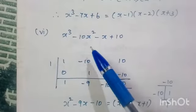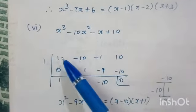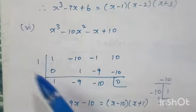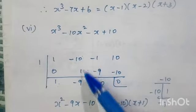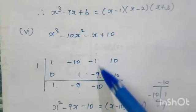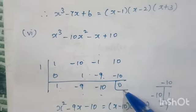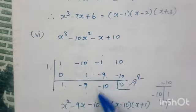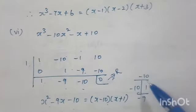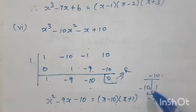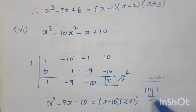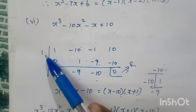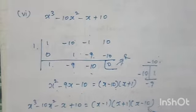Sixth problem: x³ minus 10x² minus x plus 10. It is already in standard form. Coefficients: 1, minus 10, minus 1, 10. Try 1: bring down 1, multiply 1 into 1 is 1, add to minus 10 gives minus 9, multiply minus 9 into 1 is minus 9, add to minus 1 gives minus 10, multiply minus 10 into 1 is minus 10, add to 10 gives remainder 0. Quotient is x² minus 9x minus 10. Product value minus 10, sum minus 10 — factors are minus 10 and plus 1, giving x minus 10 and x plus 1. Since we used number 1, factor is x minus 1. Final factors: x minus 1, x plus 1, and x minus 10.